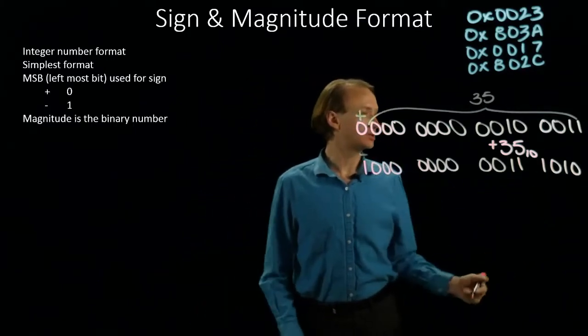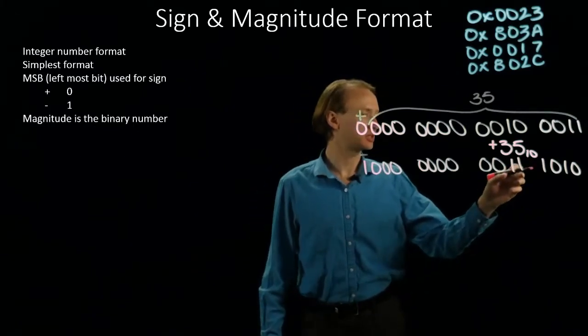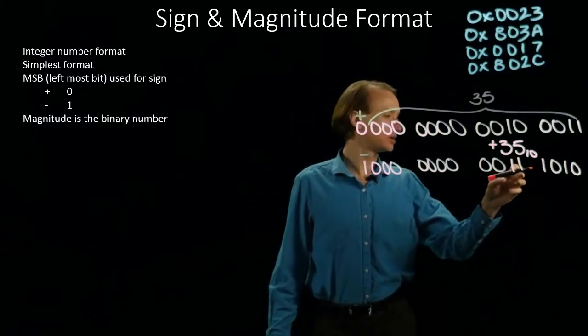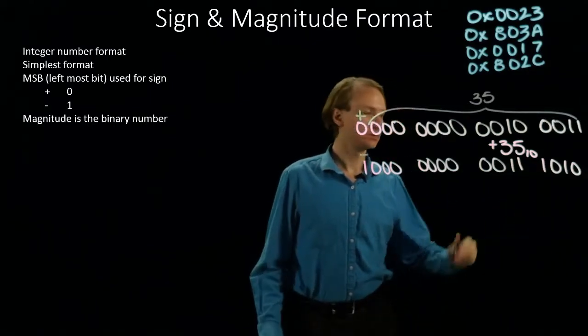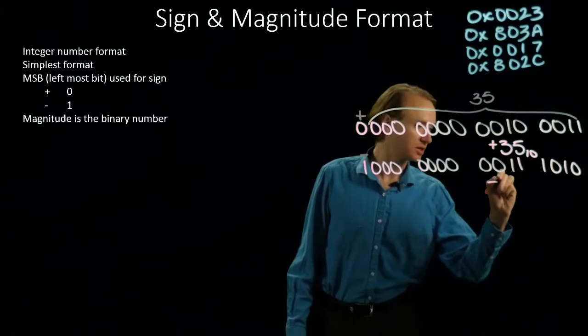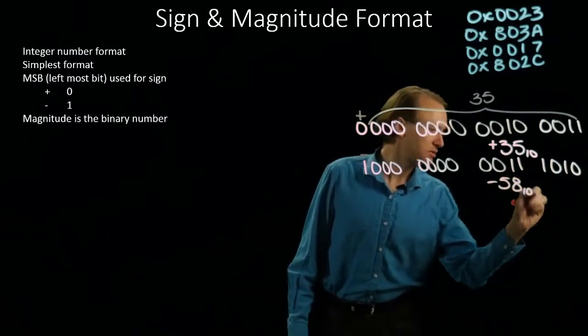Then I just need to know what the magnitude of my number is. I have 32 plus 16 gives me 48. 48 plus 10 will give me 58. So this is negative 58 in decimal.